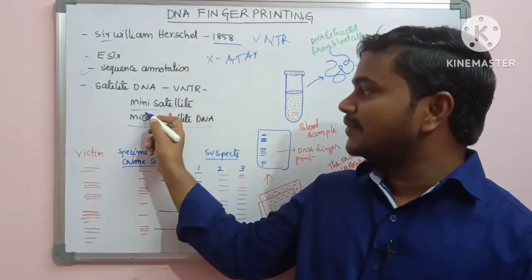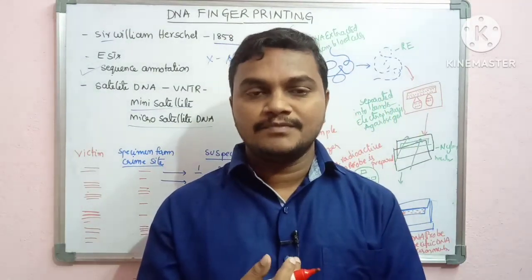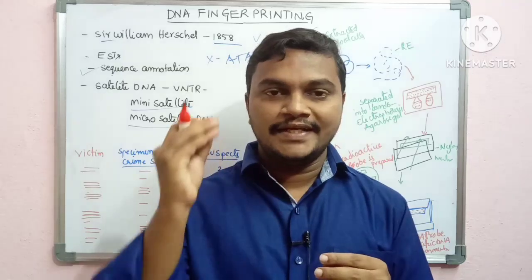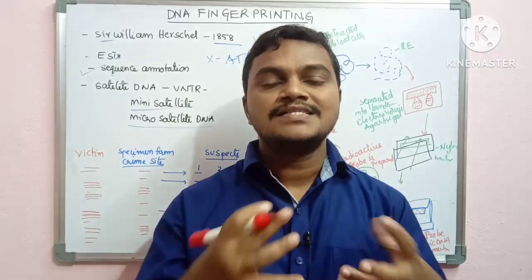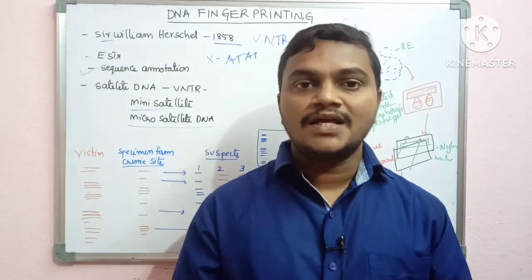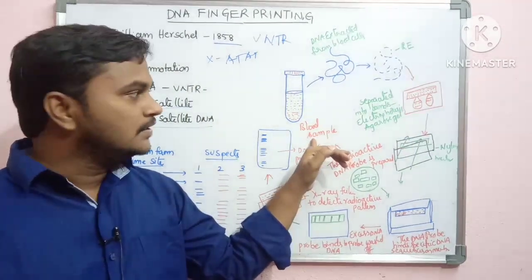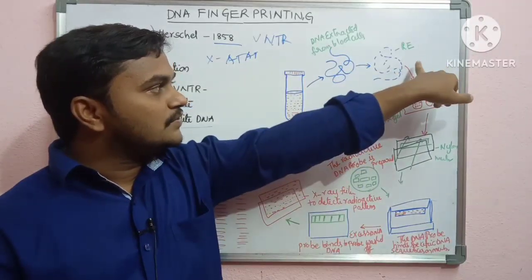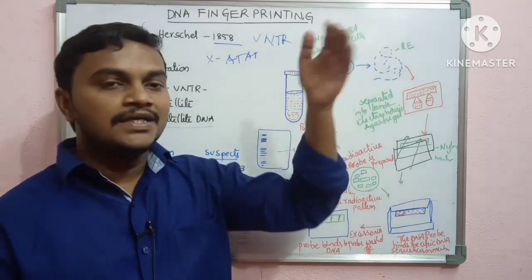We will now discuss the procedure. Suppose there is a crime — there may be a blood sample, hair, or tissue cell from a rape or murder case. We collect the DNA sample, extract DNA from blood cells, and then use restriction endonucleases to cut the DNA into small fragments.